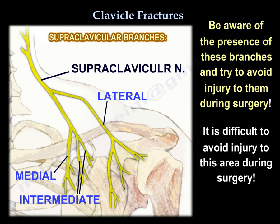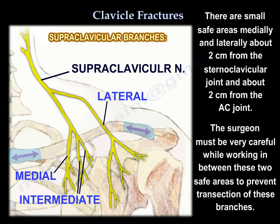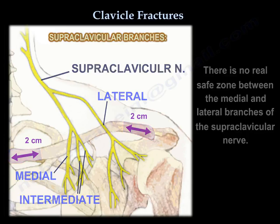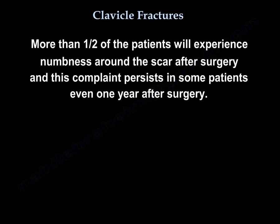It is difficult to avoid injury to this area during surgery. There is a small safe area medially about 2 cm from the sternoclavicular joint and laterally about 2 cm from the AC joint. The surgeon must be careful working between these two safe areas to prevent transection of these branches. There is no real safe zone between the medial and lateral branches of the supraclavicular nerve. More than half of patients will experience numbness around the scar after surgery, and this complaint persists even one year after surgery.